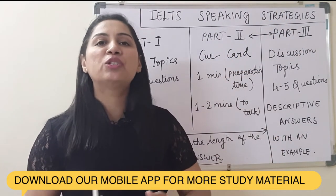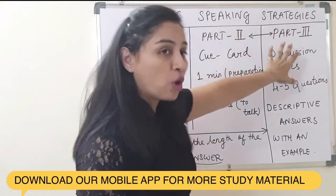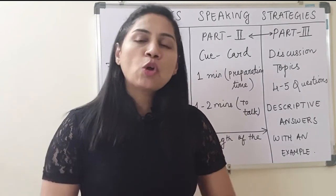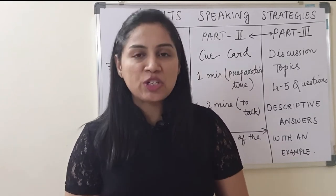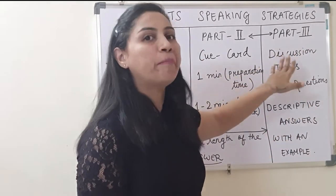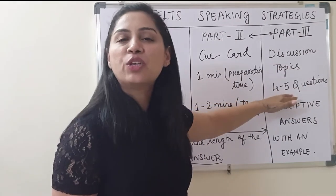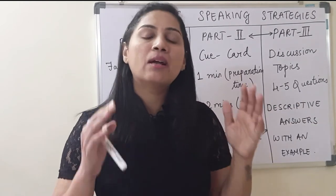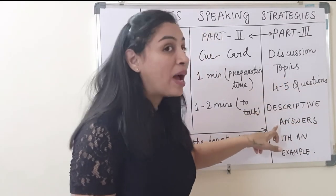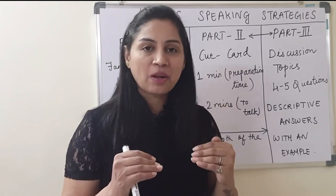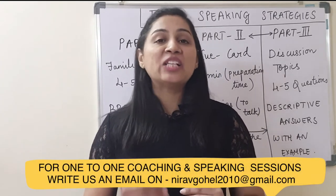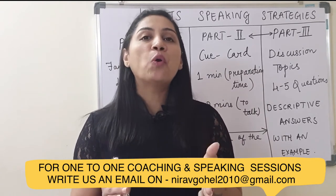Part 3 is the discussion topic. Discussion means we would be discussing topics related to the cue card. For example, if the cue card is 'describe a book that you have read,' the discussion topics can be writing as a profession or talking about authors. The examiner might ask 4 to 5 questions and can increase the number depending on how much of your language she wants to hear. The key strategy here is to give descriptive answers followed by an example, which demonstrates strong language ability and leads to a better assessment.